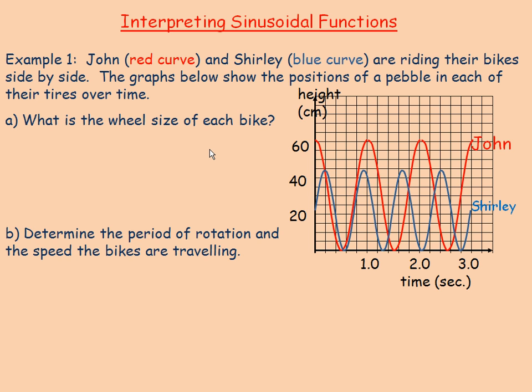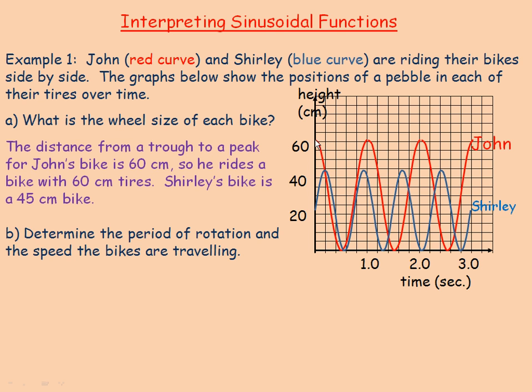The first question we're asked, what's the wheel size of each bike? If you take a look at John's bike, the pebble starts at the top of his wheel and varies from a height of 60 cm down to zero. He's riding a bicycle with 60 cm tires. Shirley's riding a smaller one, the pebble starts at the height of the axle, goes up to a height of 45 and down to zero. So hers has a 45 cm bike.